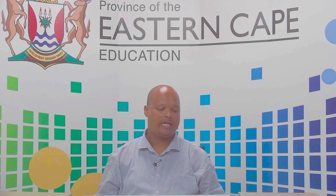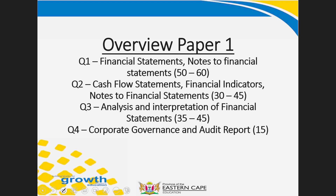The overview of the paper is as follows. For Paper 1, Question 1 normally covers financial statements and notes to financial statements, with marks ranging between 50 to 60. Question 2 covers cash flow statements, financial indicators, and notes to financial statements, ranging between 30 and 45 marks. Question 3 covers analysis and interpretation of financial statements, ranging between 35 and 45 marks. The last question covers corporate governance and audit report for a total of 15 marks.